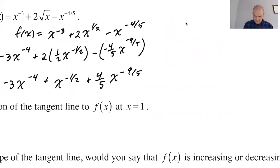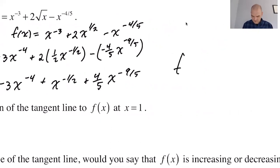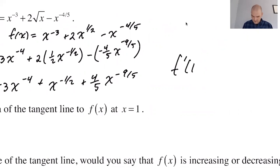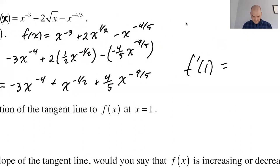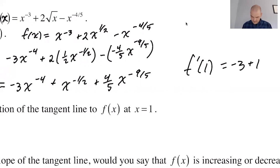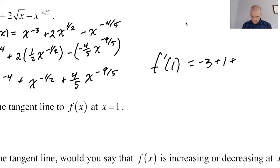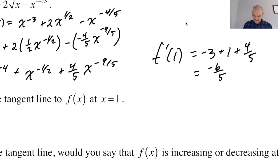Let's see, f prime of 1 is negative 3 plus 1 plus 4/5. What is that? That's negative 15/5 plus 5/5 is negative 10/5—negative 10/5 plus 4/5 is negative 6/5, I think.